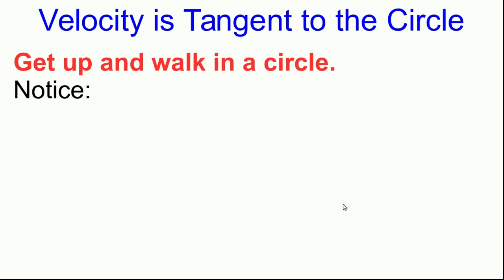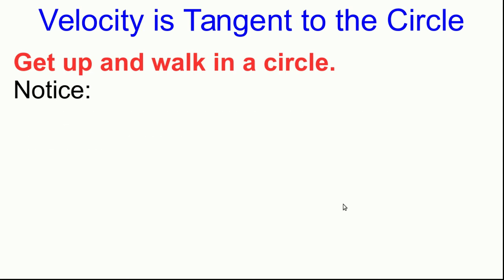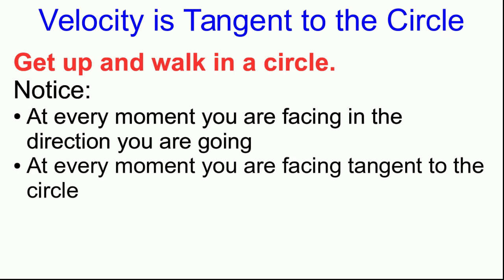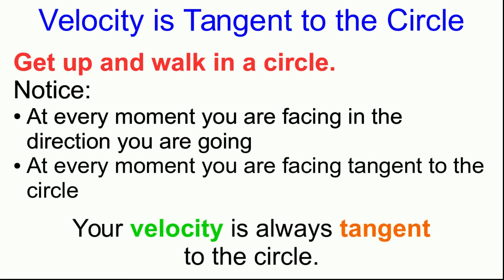Stand up for a moment. Get up and walk in a circle and notice two things. Unless you're walking rather strangely, then at every moment you are going to be facing in the direction that you are going. Or in other words, in the direction that your velocity vector points. And at every moment, notice that you are facing tangent to the circle that you're walking around. So intuitively, we can conclude that your velocity, when you're in circular motion, is always tangent to the circle.